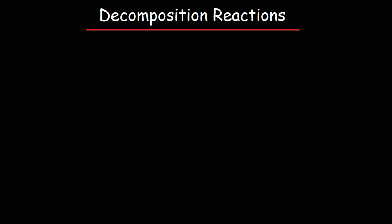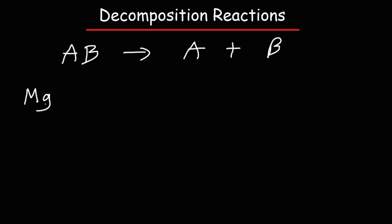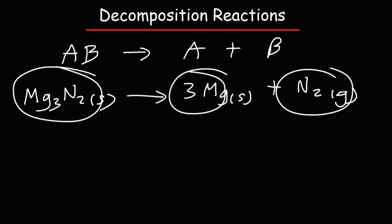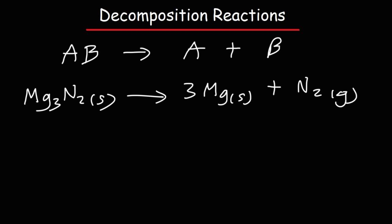Decomposition reactions. A decomposition reaction is the reverse of a synthesis or combination reaction. In this case, you're starting with a single reactant, AB, and you're going to break it up into two or more products, typically A plus B. A good example of this is magnesium nitride — this is an ionic compound, and when heated, it will decompose into its component elements, magnesium and nitrogen gas. So here we have a single compound breaking down into multiple fragments. That is a decomposition reaction.